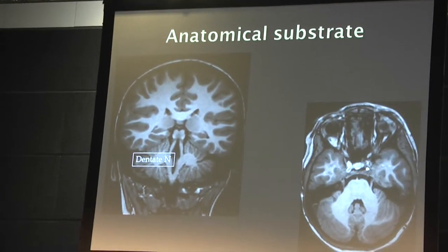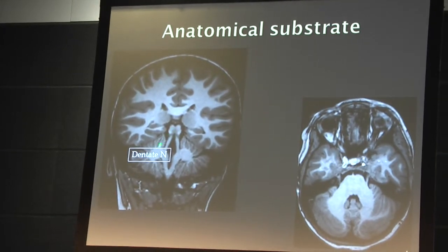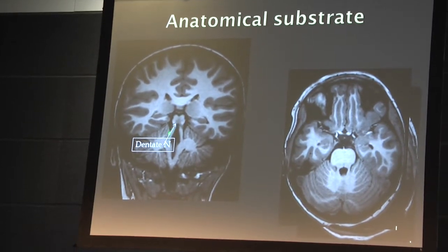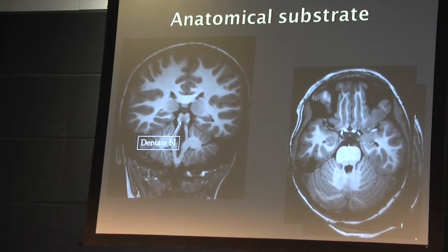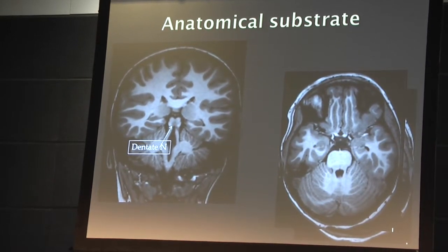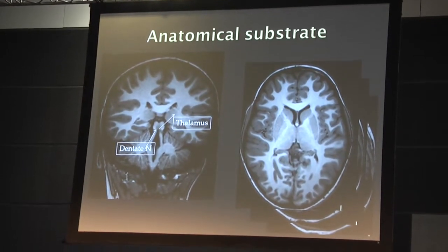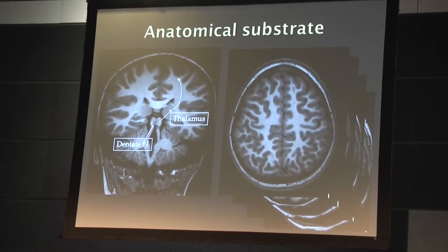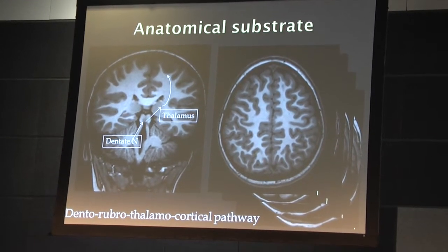So we start off at the dentate nucleus — the right dentate nucleus within the right cerebellum. The efferents from here go along the superior cerebellar peduncle and cross to the red nucleus in the brainstem. That constitutes the proximal efferent cerebellar pathway. From the red nucleus, it goes across to the thalamus, and from the thalamus to the cortex on the opposite side. So that's the dentorubrothalamocortical pathway.